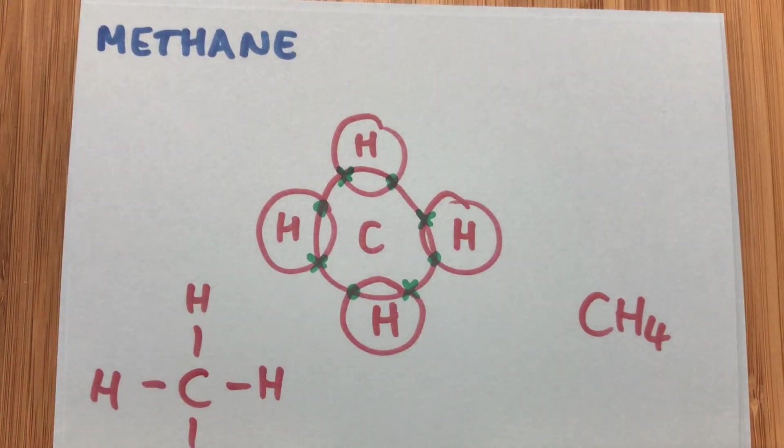And then the last one, methane, comes out of the gas taps. Carbon, which we haven't come across yet in this video. Carbon has four electrons in its outer shell, being in group four. So four hydrogens help out each sharing one electron with the carbon.